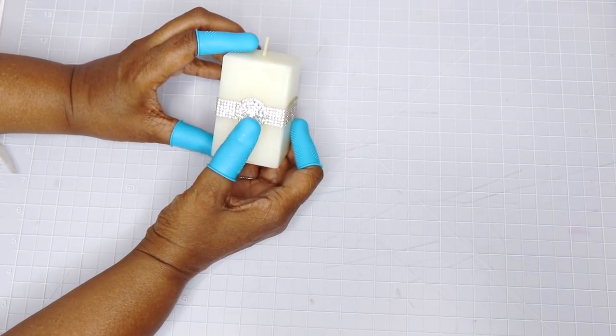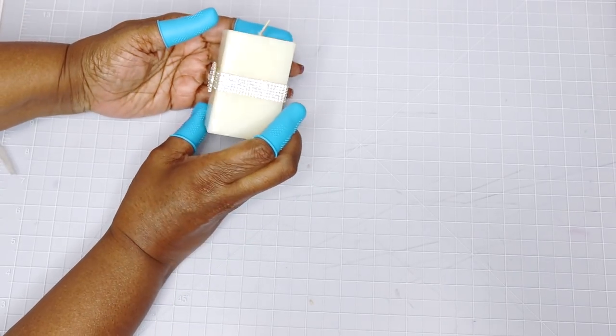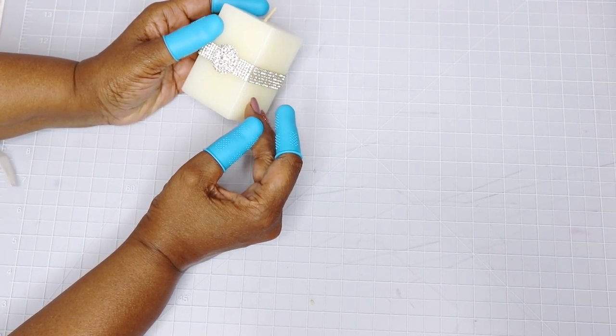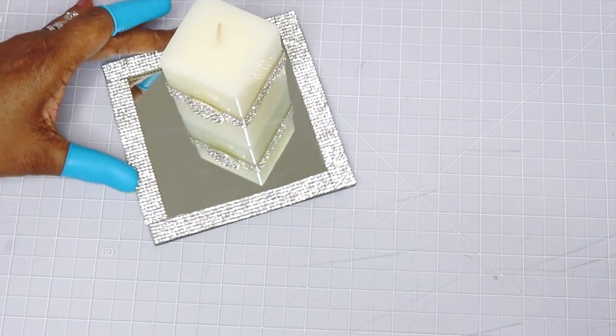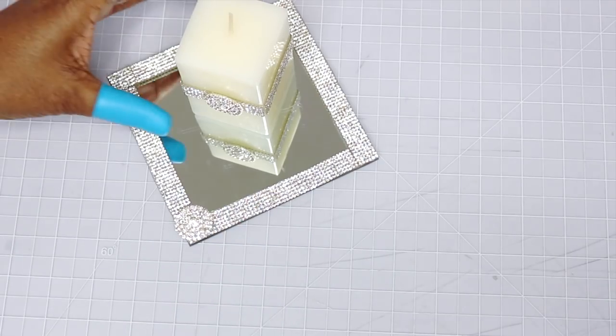Right now I'm going to apply this silver and faux diamond embellishment to the front of the candle. That came out beautiful, it looks like something you would buy from the store. I really fell in love with this look and I'm going to do the same thing with some round candles that I have.